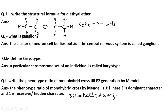Write the structural formula for diethyl ether. Ether has an oxygen functional group. Diethyl ether is a derivative of hydrocarbon. The structural formula is C2H5-O-C2H5 — two ethyl groups connected by an oxygen atom, representing diethyl ether.